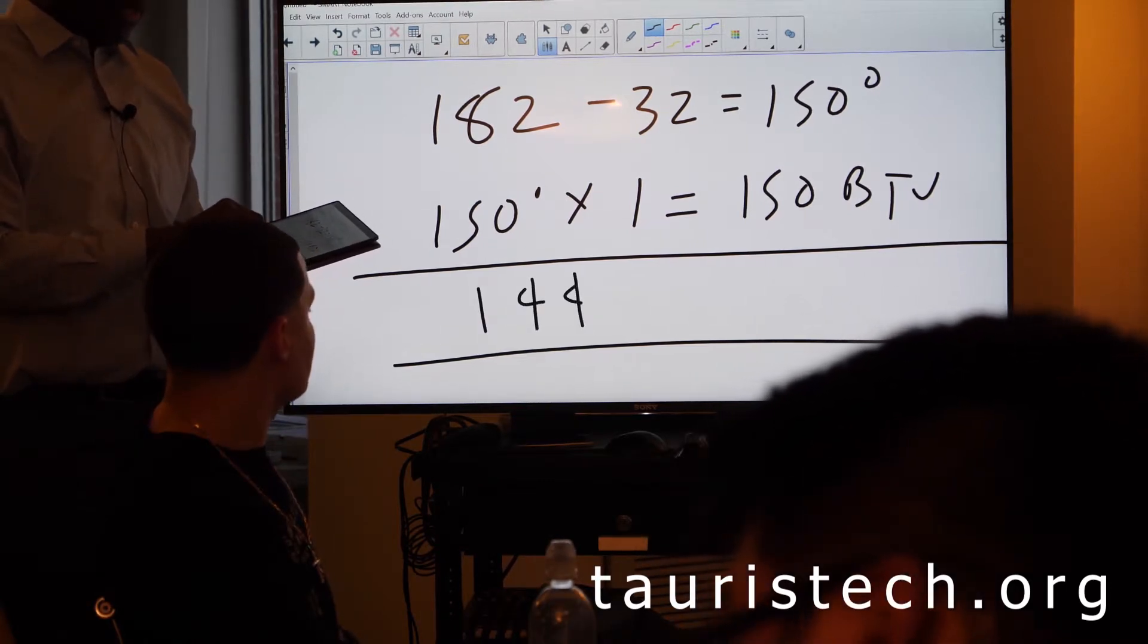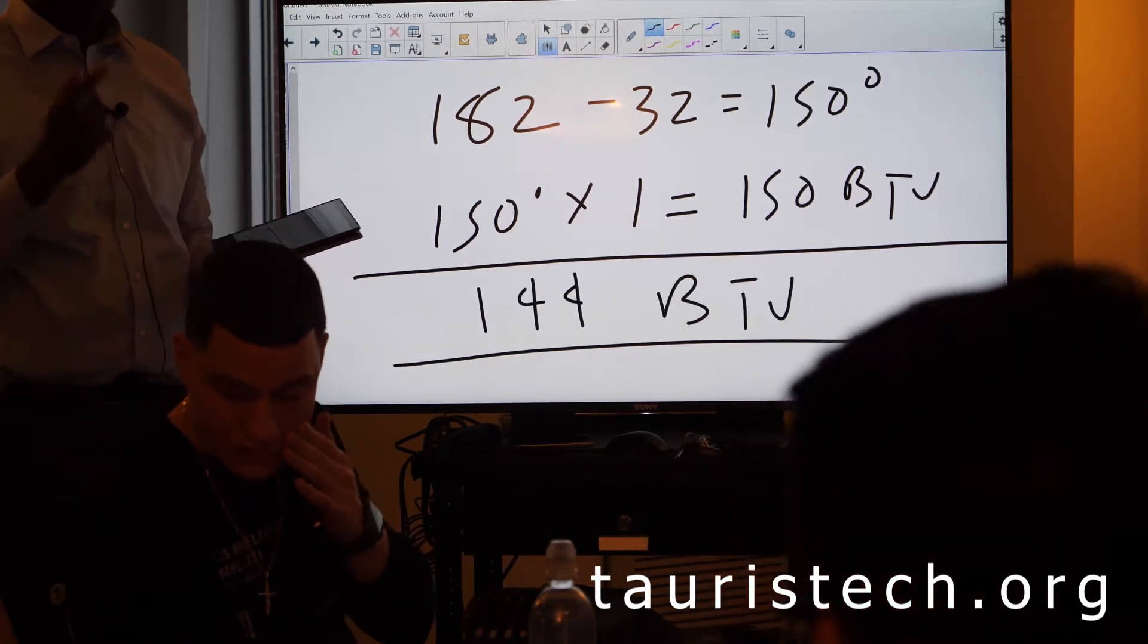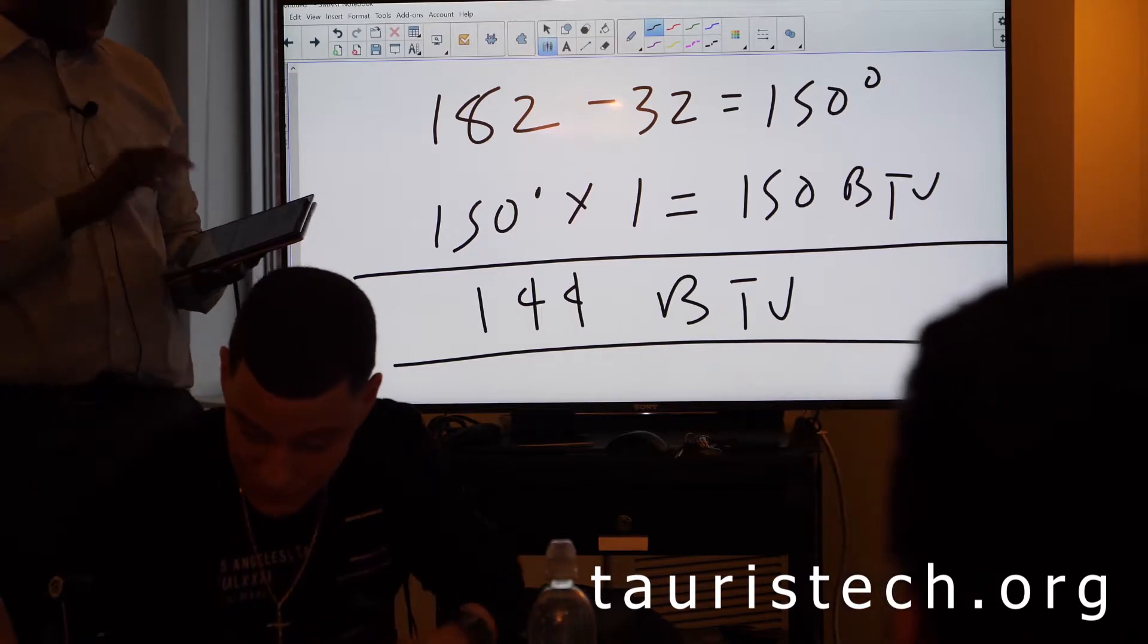So 144 BTU, that is a given. That's our latent heat.